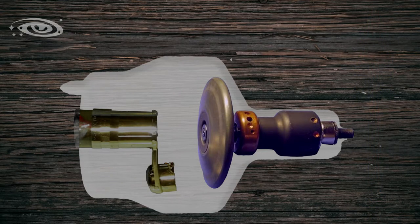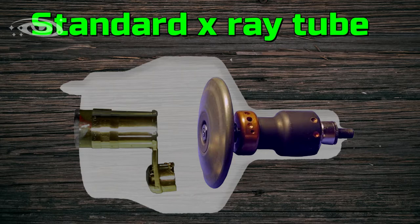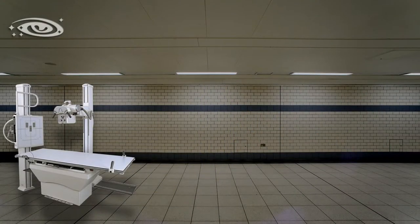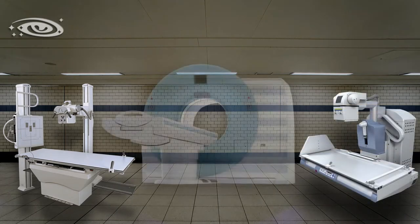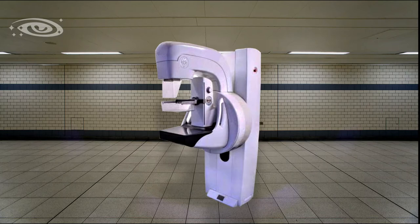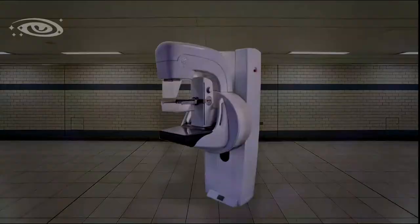At last, this rotating anode X-ray tube becomes standard X-ray tube in the radiological field. Still now, we are using this X-ray tube. And this rotating anode X-ray tube is used in general radiography machines, fluoroscopy machines, computed tomography machines, mobile X-ray machines and mammography machines.